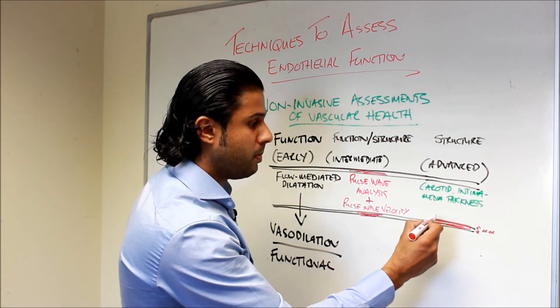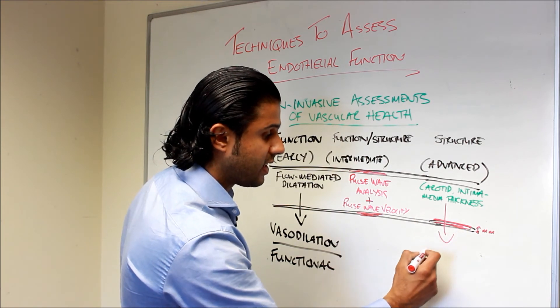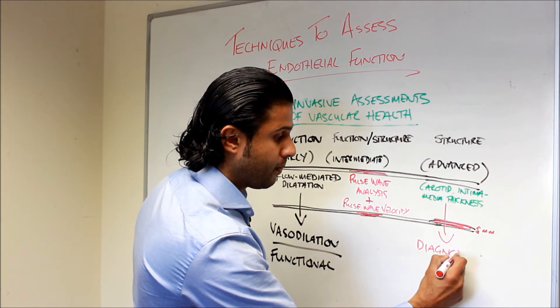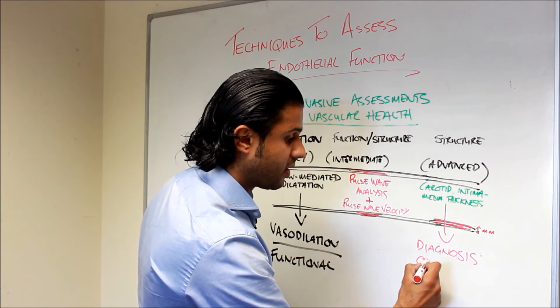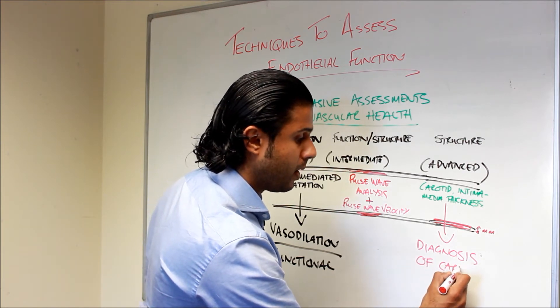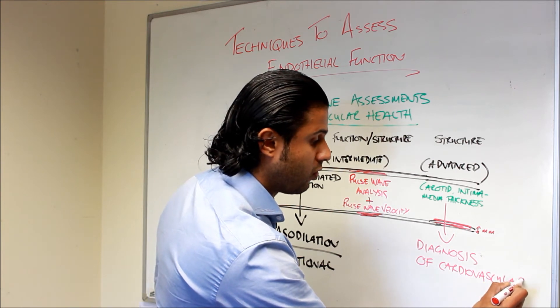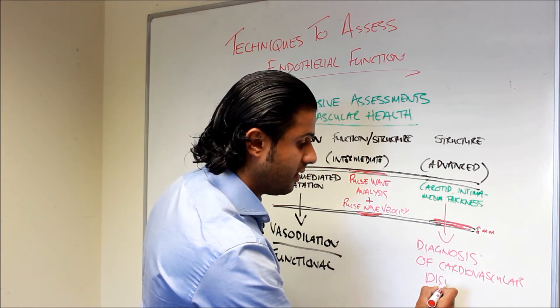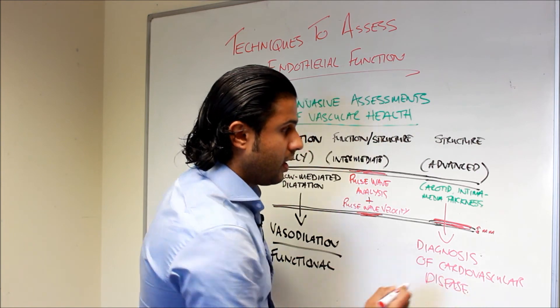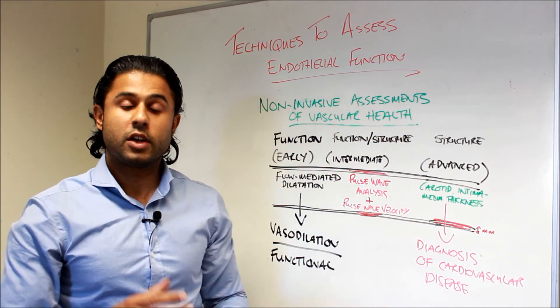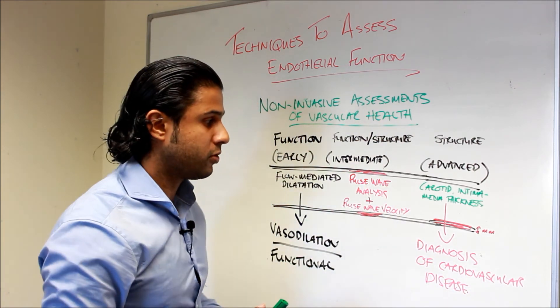Carotid intima-media thickness is actually used in vascular labs for the diagnosis of cardiovascular disease. And there's cutoffs for men and women. And obviously, if you're above those cutoffs, then it means that you're at a greater risk of cardiovascular disease. Carotid intima-media thickness gives us a good indication of the structure of the blood vessel.